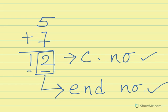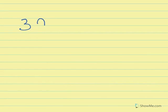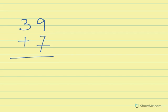Let's take a double digit number: 39, and we are going to add it with 7. Following the Vedic maths rule, we go from left to right. In the tens position, 3 is there.